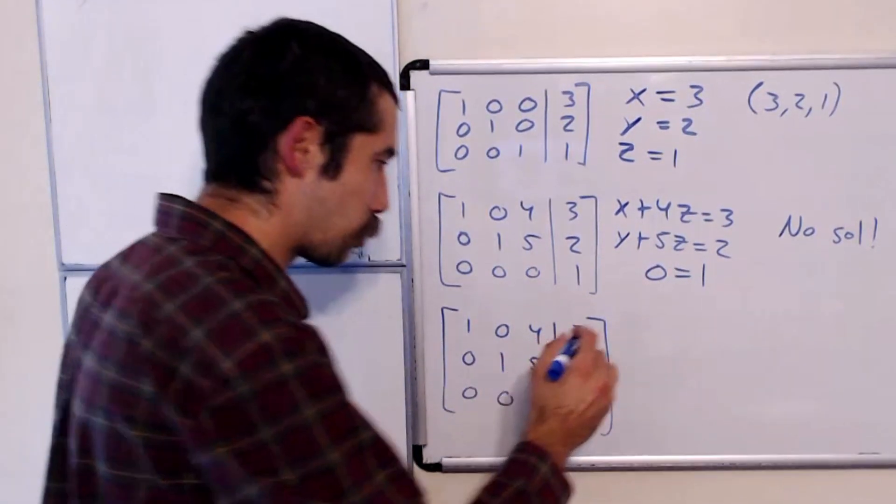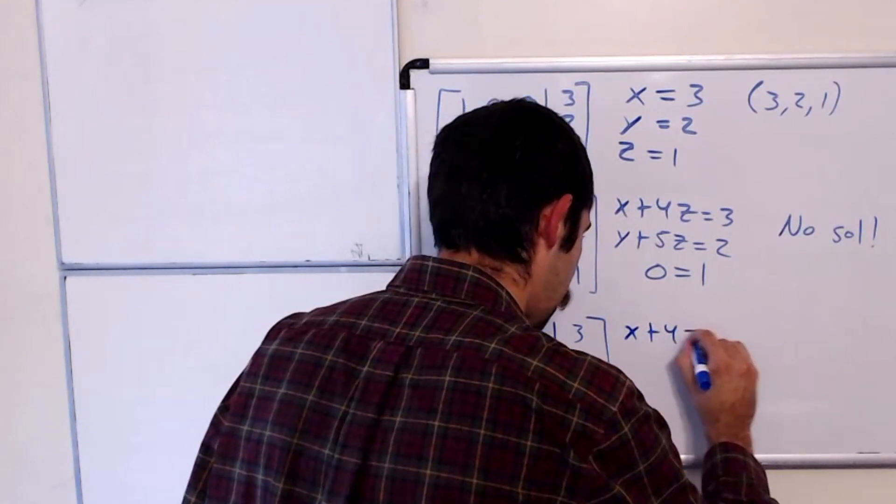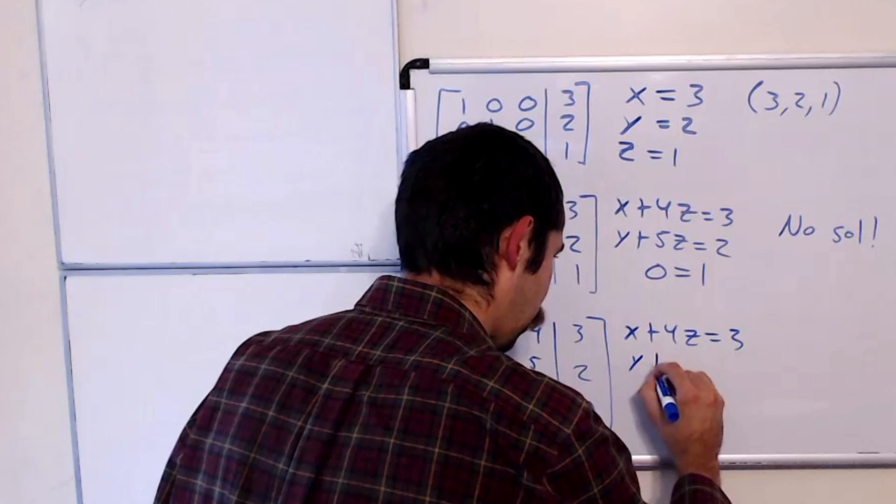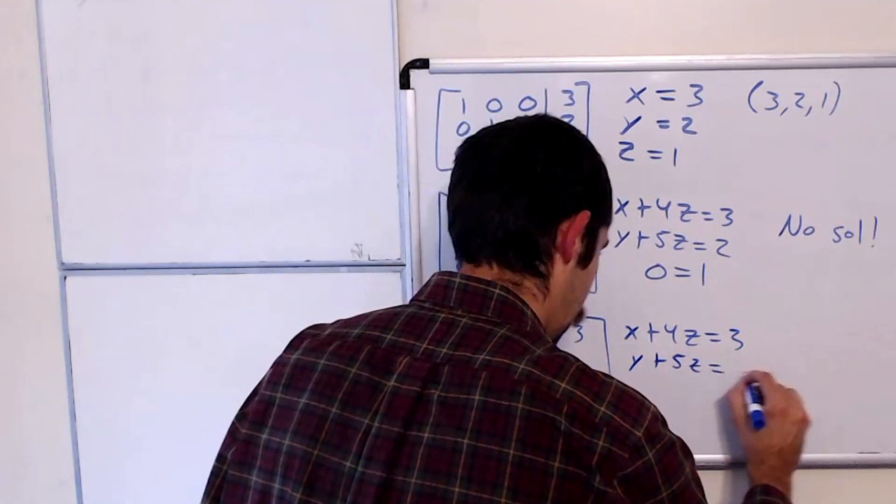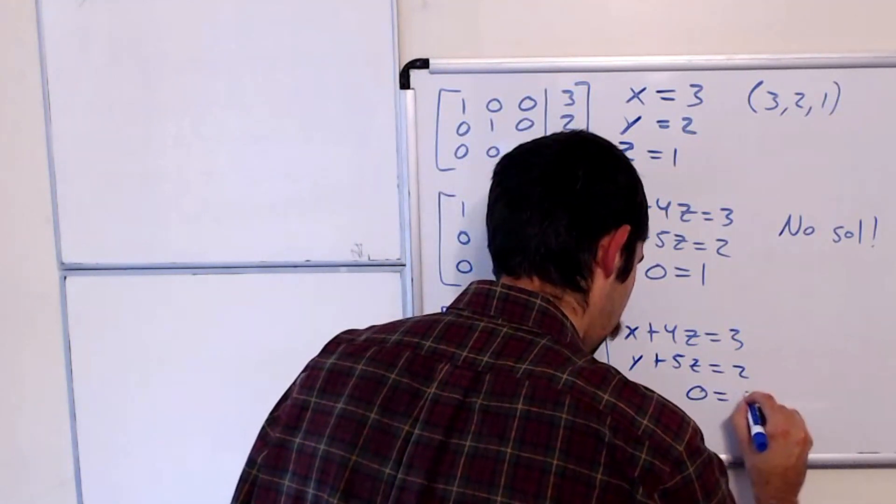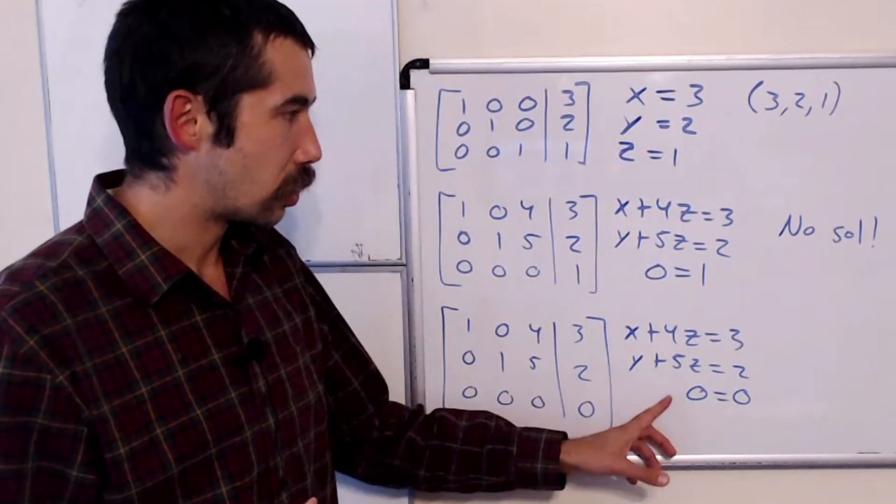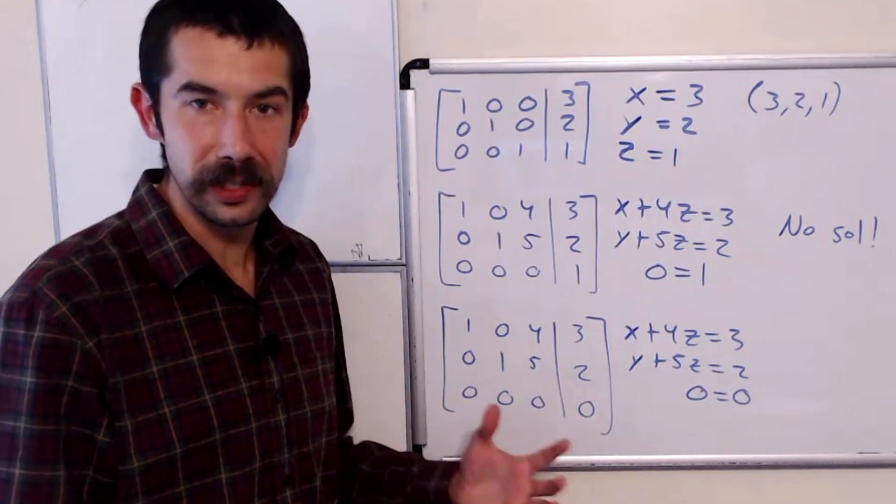Now just quickly, this last one, the top row is x plus 4z equals 3. And y plus 5z equals 2. And 0 equals 0, which is a fact, right? That's just a true statement. So here we actually will have infinite solutions.